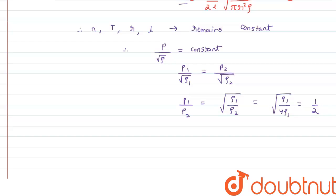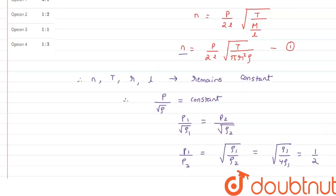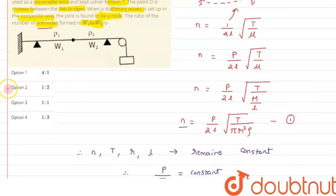So this is the number of loops we are getting, or basically we can say number of anti-nodes that are coming in the ratio one is to two. So this matches with option two. I hope you have understood the concept and thank you for watching.